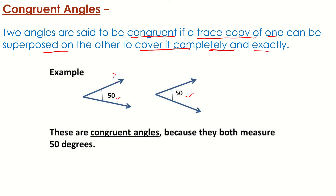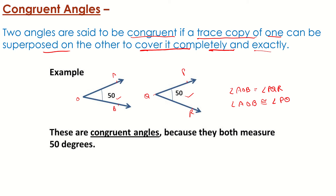Suppose one angle is AOB and the other is PQR. Then angle AOB is equal to angle PQR, and we can also say that angle AOB is congruent to angle PQR.